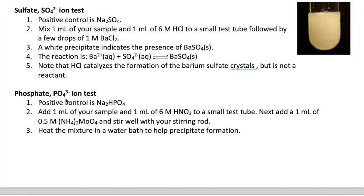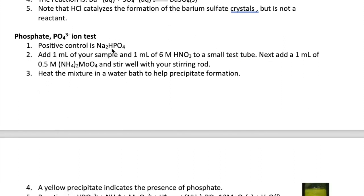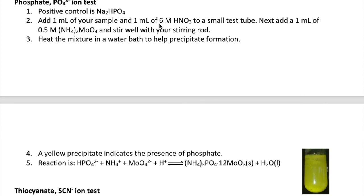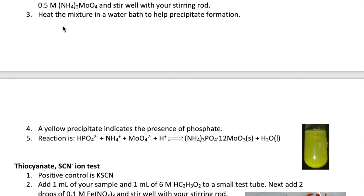The third test is for the phosphate ion, which uses sodium hydrogen phosphate as the control. Here you're going to add nitric acid to your sample, and then one milliliter of ammonium molybdate, and you would stir this mixture well to mix. You then want to heat the mixture in a water bath, which will help to form a yellow precipitate of ammonium phosphomolybdate if phosphate is originally present in the sample.